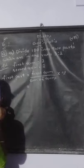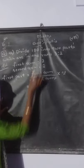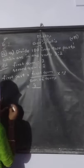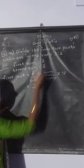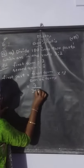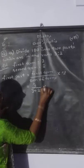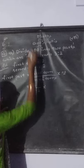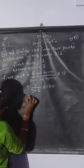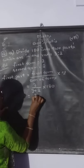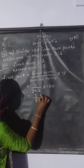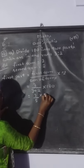So first part is equal to: what is the first term? 3. Sum of the terms — add both terms, so 3 plus 2. Into the number, which is 180. That gives us 3 divided by 5, into 180.